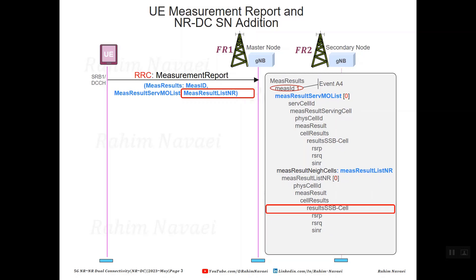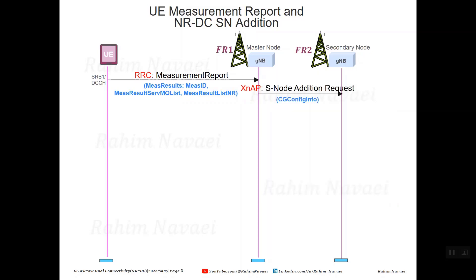The master node evaluates the reported NR cell to determine whether it is a valid candidate for setting up NR dual connectivity. If the reported cell is suitable, the master node initiates secondary node addition by sending a secondary node addition request message to the target secondary node via the XN interface using XN application protocol. The message includes configuration of any data radio bearers that are allowed to be secondary node terminated — for instance, converting master node terminated DRBs to secondary node terminated split DRBs.